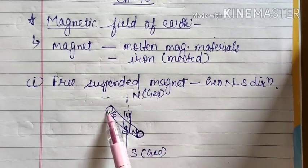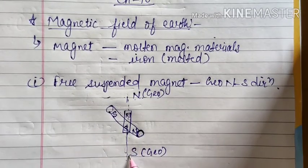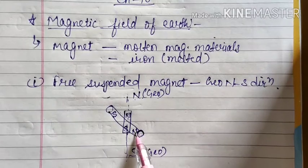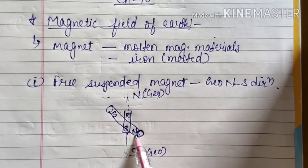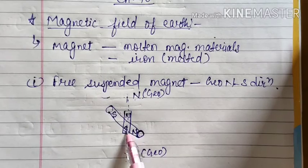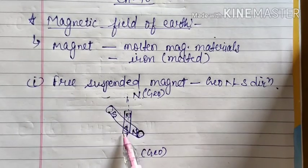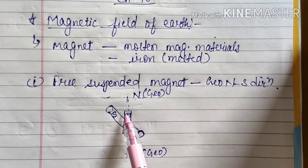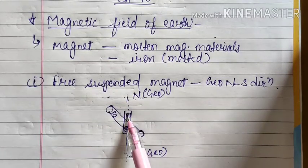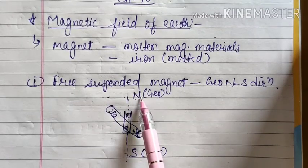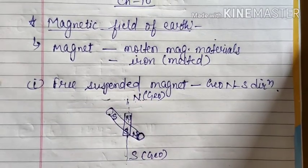Similarly, the earth's magnet will have a north pole towards the geographic south pole, and the north pole of the earth's magnet will attract the south pole of the bar magnet. There will be attraction between both these poles, and at a particular place the bar magnet will become stationary with its north pole towards geographic north and south pole towards geographic south.